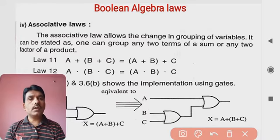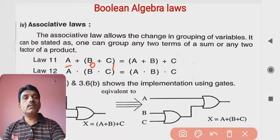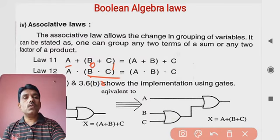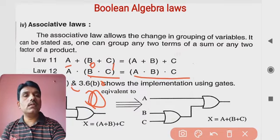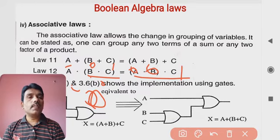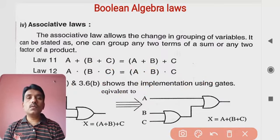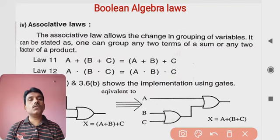Similarly for law number 12, the AND operation associative law. Taking condition 0-0-1: first solve bracket B AND C, which is 0 into 1 equals 0. Then A AND that result: 0 into 0 equals 0. Left hand side is 0. For the right hand side with inputs 0, 0, 1: A AND B is 0 into 0 equals 0, then 0 AND C is 0 into 1 equals 0. Left hand side equals right hand side.